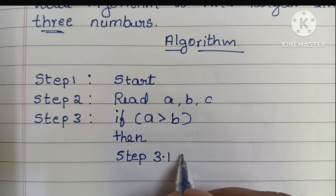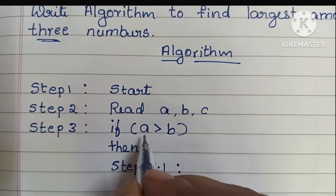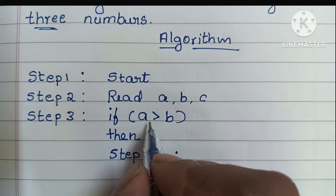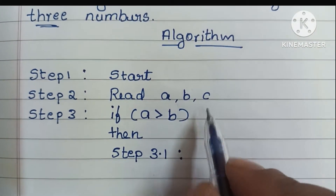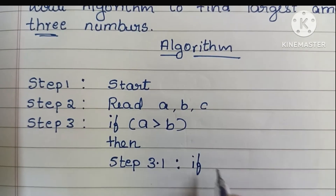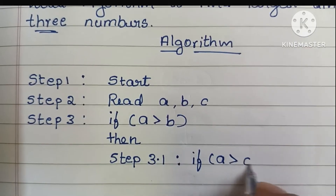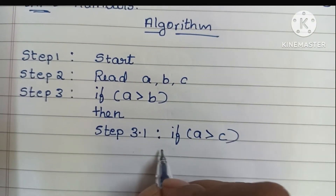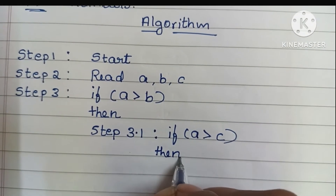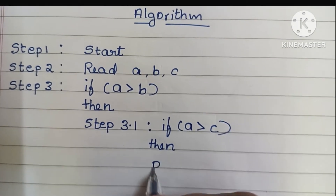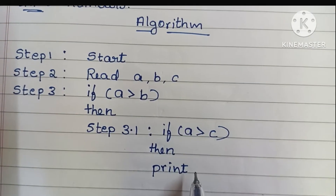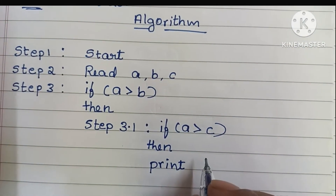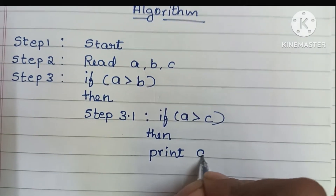In step 3.1: a is greater than b, so next we have to check a with c. If a is greater than c, and this condition is true, then a is greater than both b and c, so we have to print: a is largest.